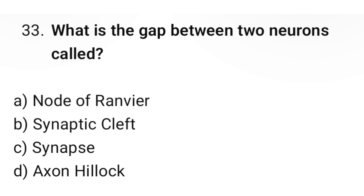Question number 33: What is the gap between two neurons called? The correct option is B. Synaptic cleft.